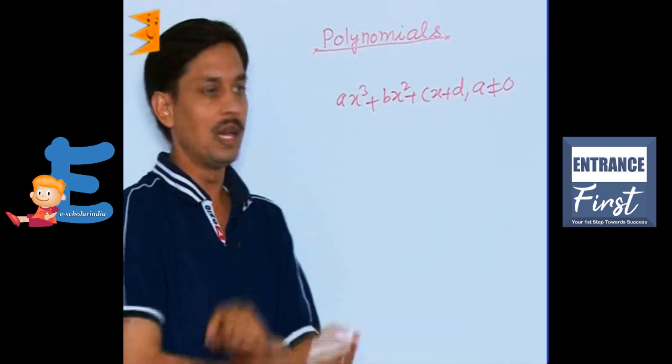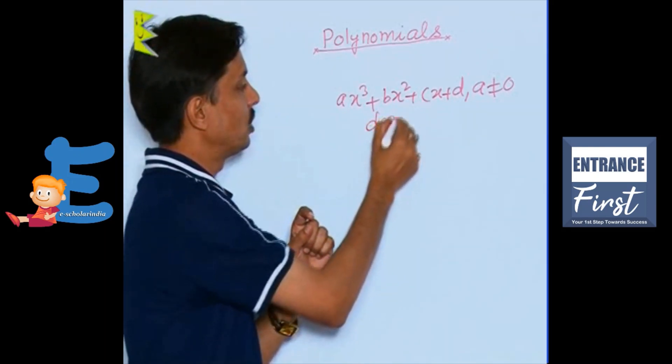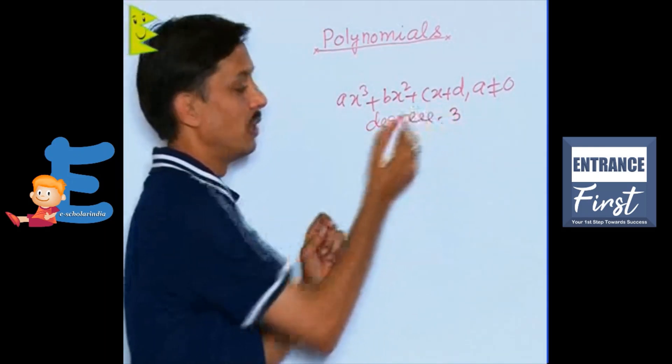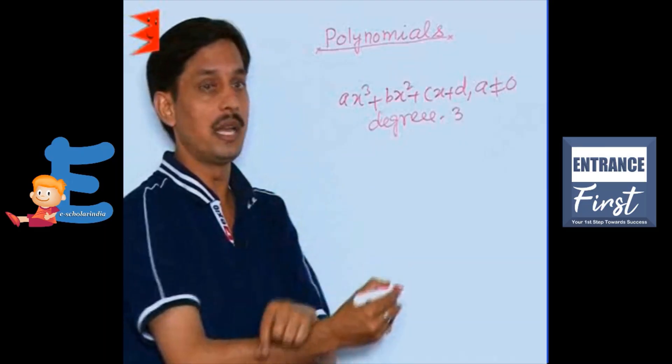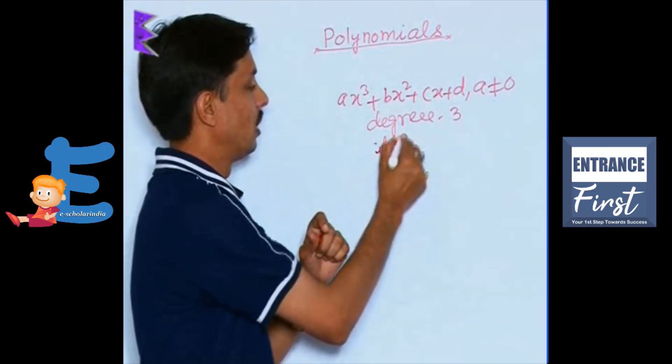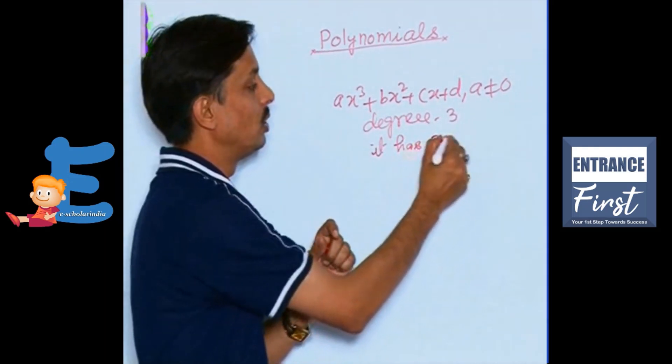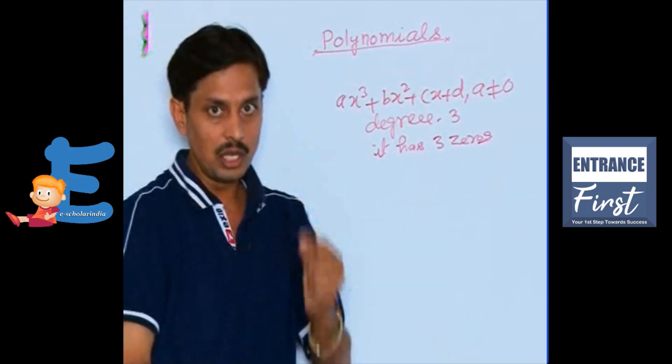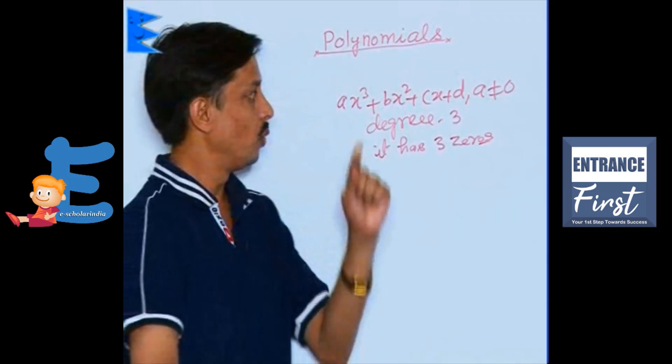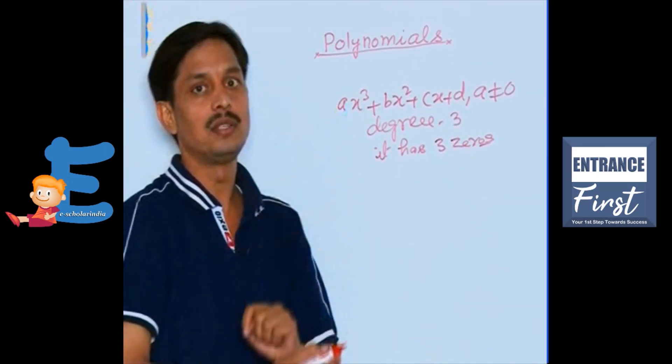It is a cubic polynomial. Its degree is how much? Its degree is 3. If its degree is 3, how many zeros it has? A cubic polynomial has 3 zeros. What is the meaning of 3 zeros? It has 3 values of x which can make this result as 0.